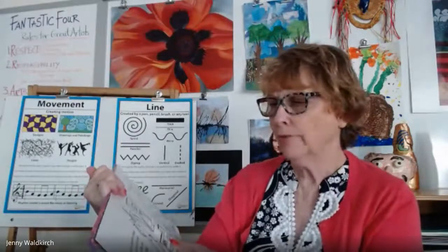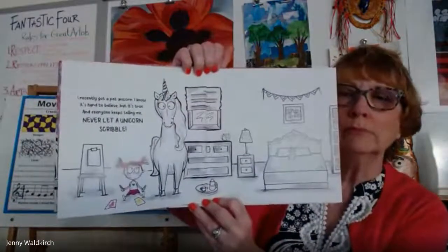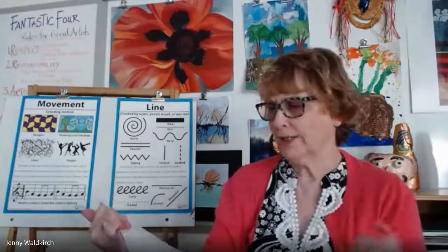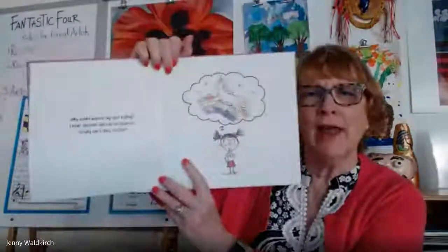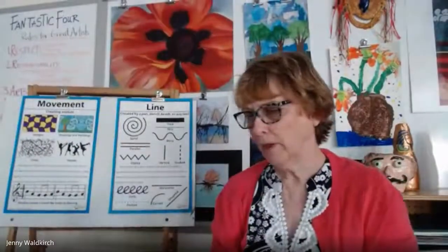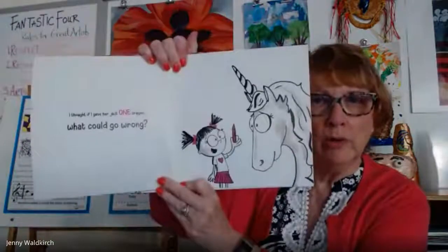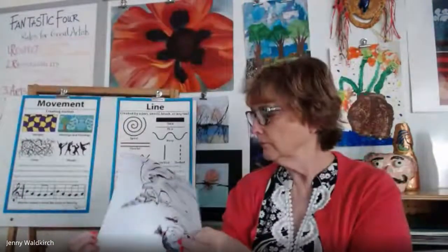"I recently got a pet unicorn. I know it's hard to believe, but it's true. And everyone keeps telling me, never let a unicorn scribble." Why would anyone say such a thing? I mean, unicorns can run on rainbows, so why can't they scribble? That is a great question. "I thought if I gave it just one crayon, what could go wrong? I mean, really, what could go wrong?"